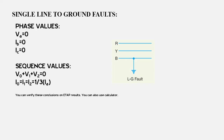If we talk about sequence values, the vector sum of sequence components of the voltages is going to be zero in a single line to ground fault. And in a single line to ground fault, the sequence current components are equal, and they are equal to one third of the fault current.